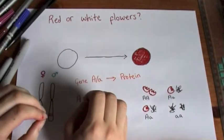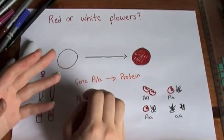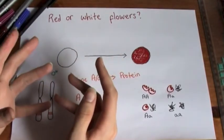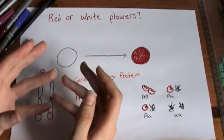So say there's a species of flower and you either get white varieties or red varieties. You don't get anything in the middle and it just depends on the genetics.